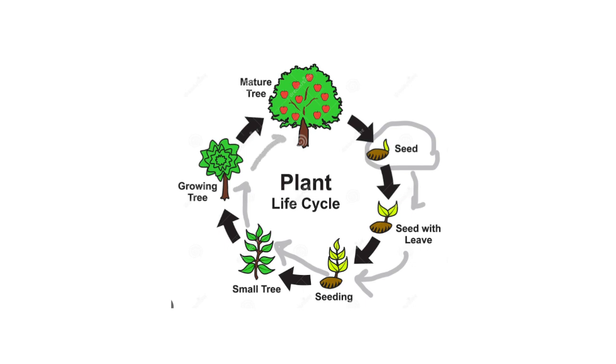And at the end, we have a mature tree with fruits. This is called the plant life cycle.